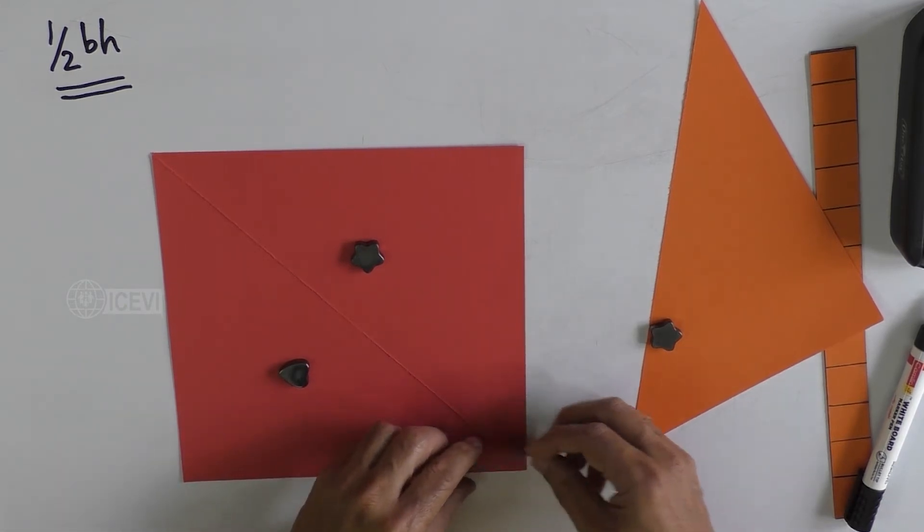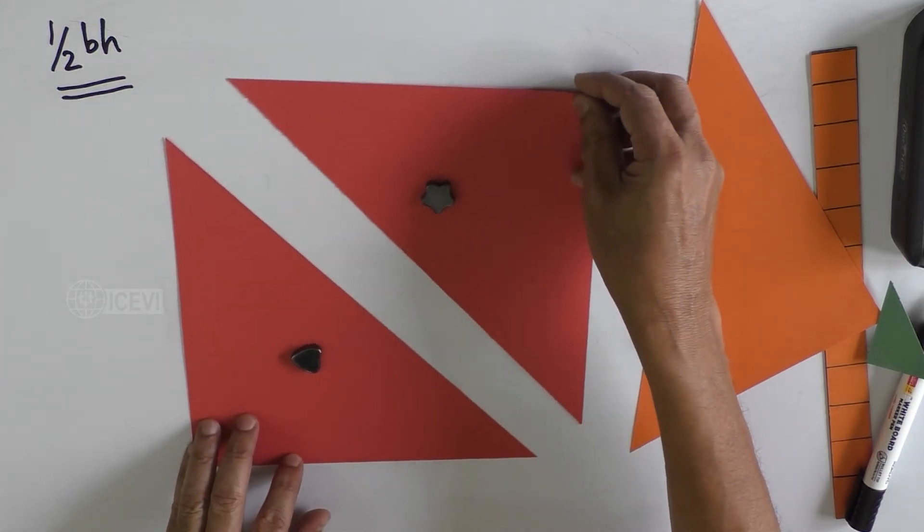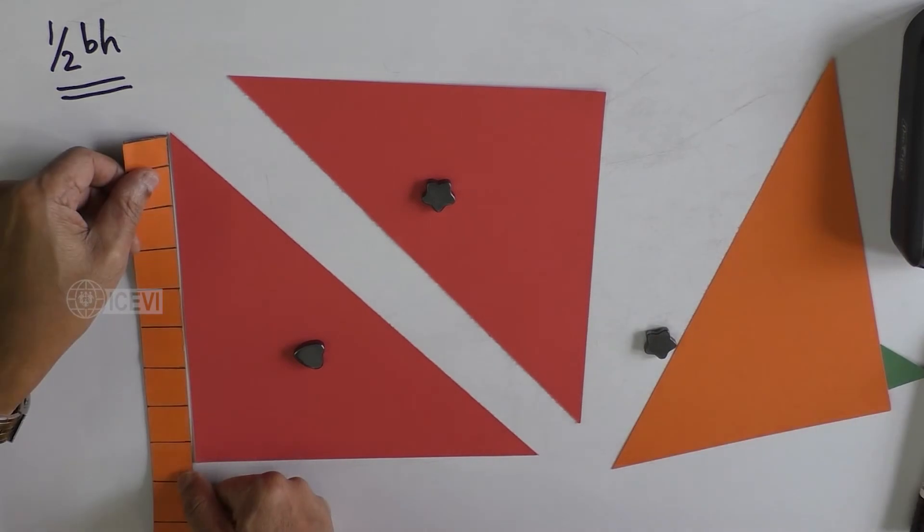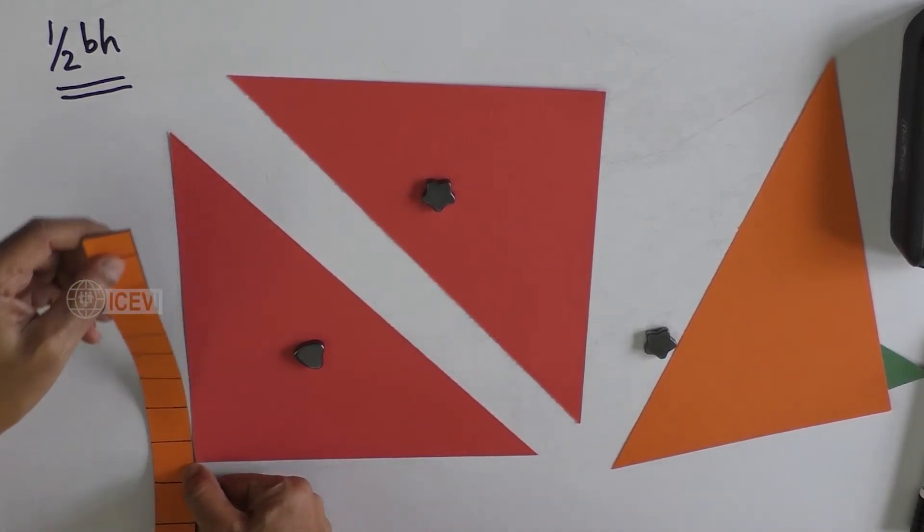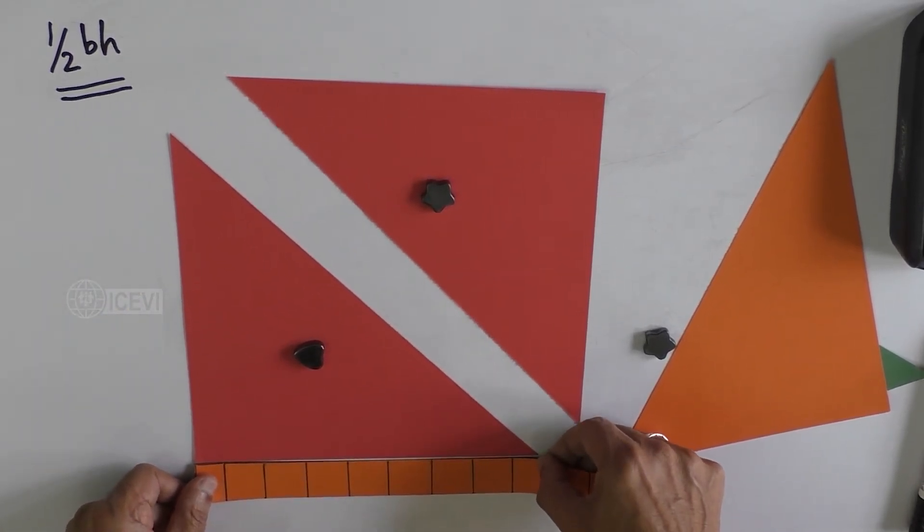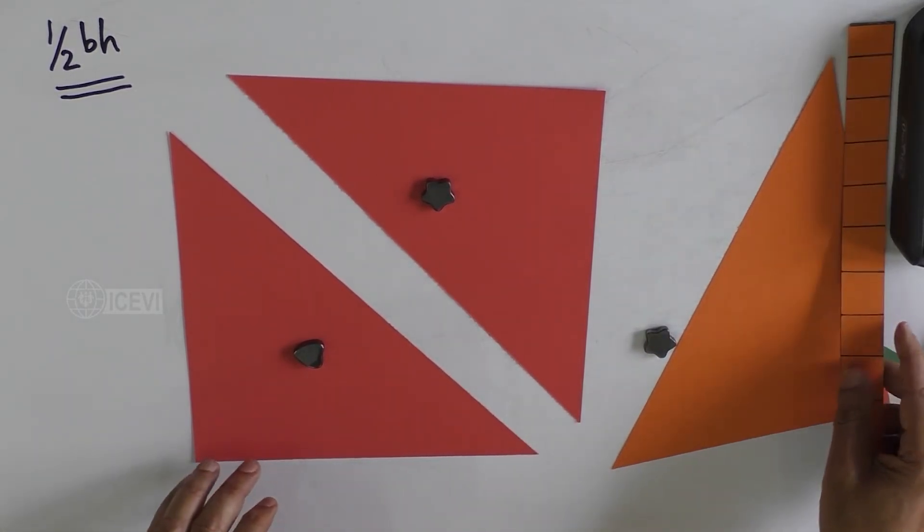What happens when you make this square into two right angle triangles? Unlike the triangle you get out of the rectangle, in the case of square, you can notice that the base and height of the triangle are equal.